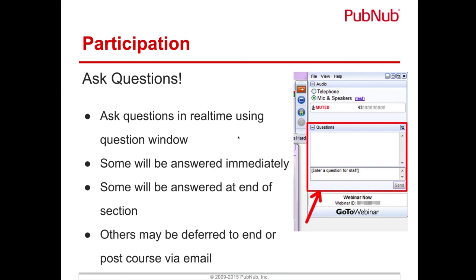For participation, please ask questions. There is a questions box in the GoToWebinar toolbar docked on one side of your screen. Enter your text where it says 'enter a question for staff' and you'll see a response in the larger text box at the top. If you have a more detailed architectural question, please send a ticket to support@pubnub.com and myself or one of the other staff members will follow up with you.